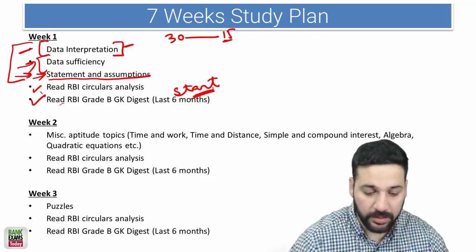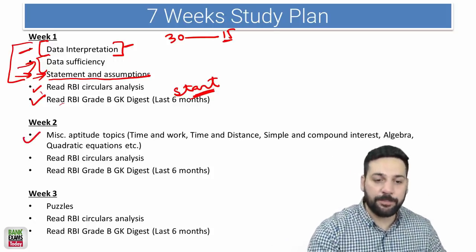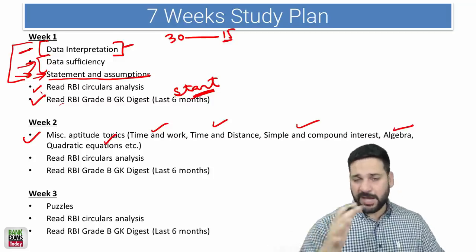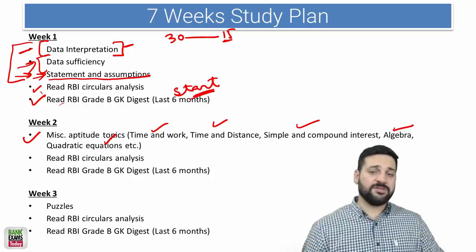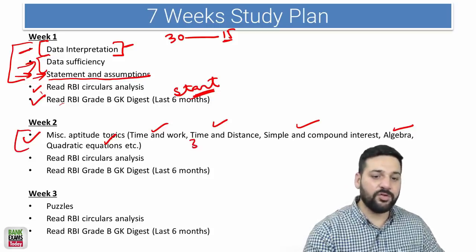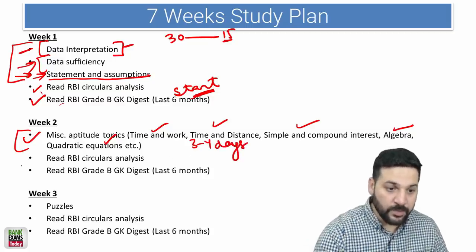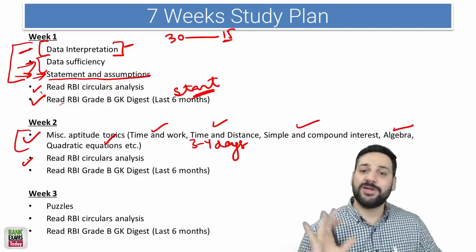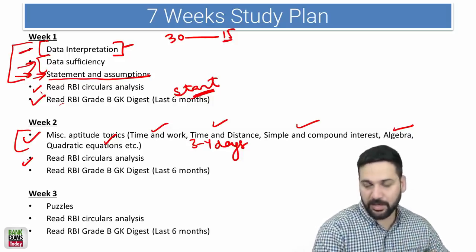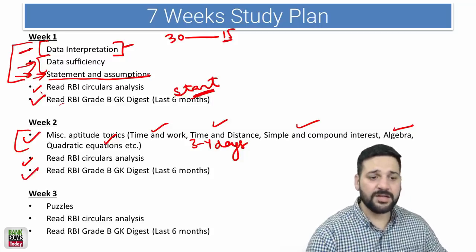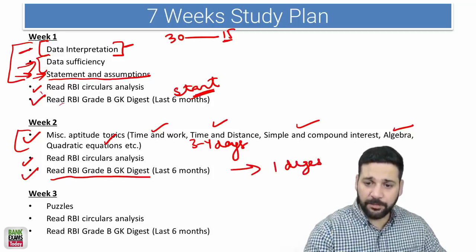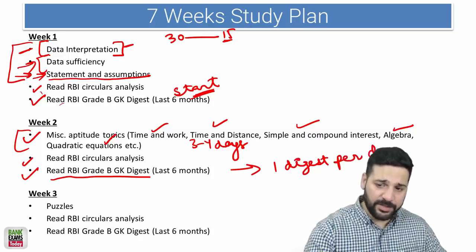In Week 2, you can do the miscellaneous aptitude topics like time and work, time and distance, simple and compound interest, algebra, quadratic equation, percentages, averages, problems based on ages, problems based on trains. These are very important topics. In the beginning of Week 2 it will take you around 3 to 4 days to do these topics, followed by the RBI circulars. You need to read the RBI circular every single day because you need to go through the RBI circulars for last 6-7 months. Then keep on reading the RBI Grade B GK digest that we have prepared. Make a target of one digest per day.